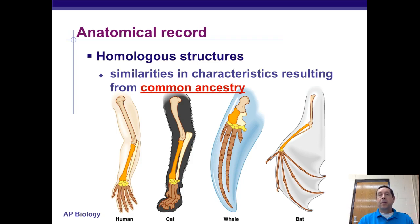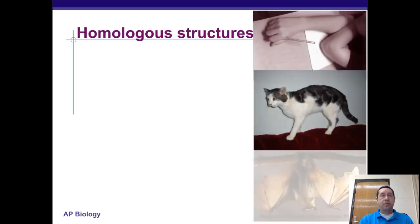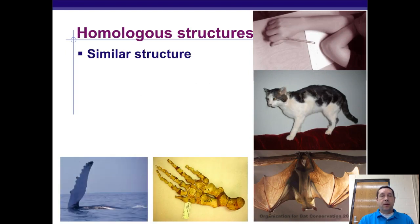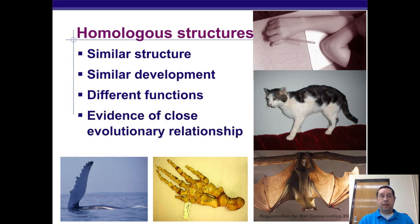The anatomical record's homologous structures are similarities in characteristics from common ancestors. Here we see the forelimbs of humans, cats, whales, and bats — they've been modified for specific adaptations, but they share similarities, particularly in the wrist bones. Homologous structures have similar structure and similar development, but different function. This is evidence of a close evolutionary relationship between these different mammals, indicating they have a recent common ancestor.